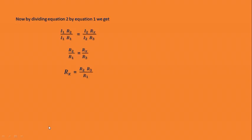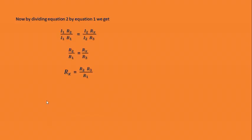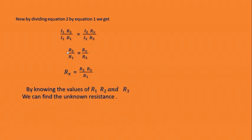Now by dividing equation number 2 by equation number 1, and cancelling I1 and I2 on both sides, our result is R2/R1 = Rx/R3. So all we have to do is equate this with respect to Rx. Then Rx equals R2·R3 divided by R1. By knowing the values of R1, R2, and R3, we can find the unknown resistance.